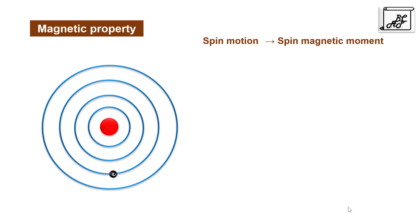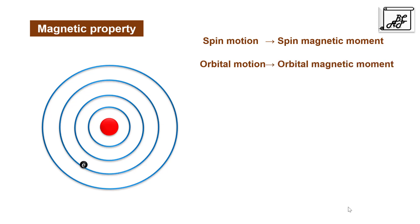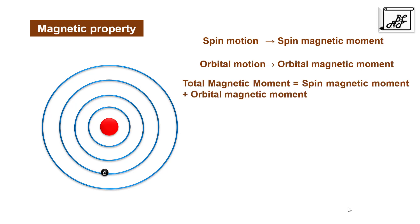The electron not only revolves around its axis but also revolves around the nucleus. This motion is called orbital motion. Due to this orbital motion it has an orbital magnetic moment. The total magnetic moment of any element is the combined contribution of spin magnetic moment and orbital magnetic moment.